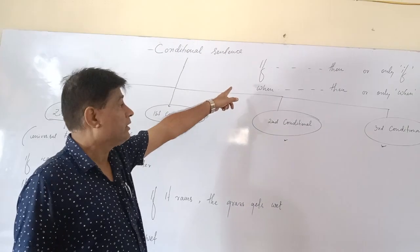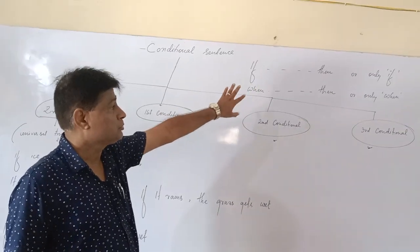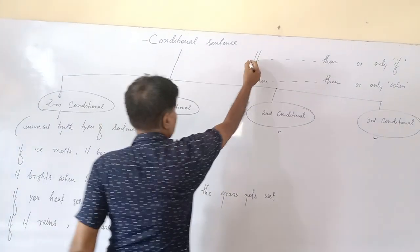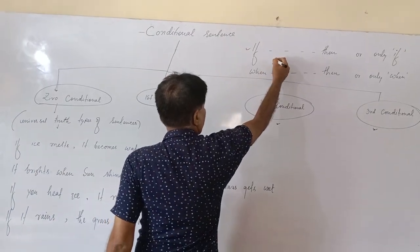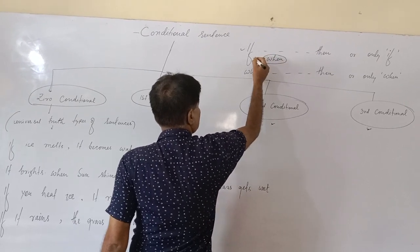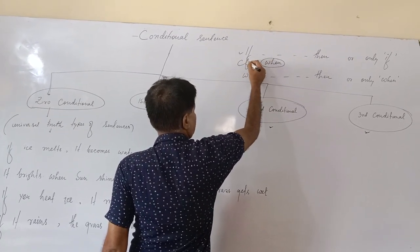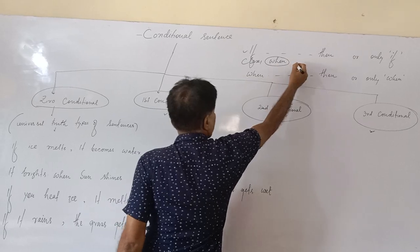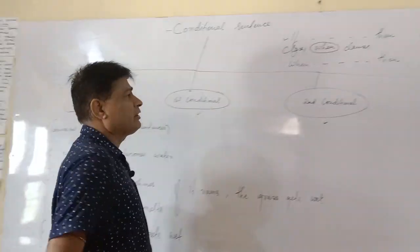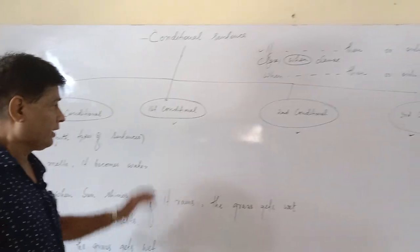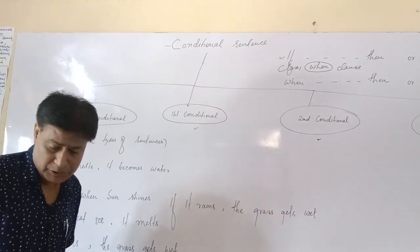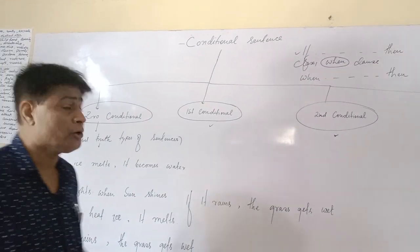As I said, if and then are used as correlative conjunction. You can use both if and then or only when to maintain two clauses together, clause one and clause two. Let me talk with regards to zero condition. In which conditions you are going to use zero condition?